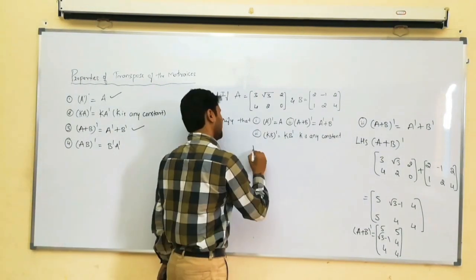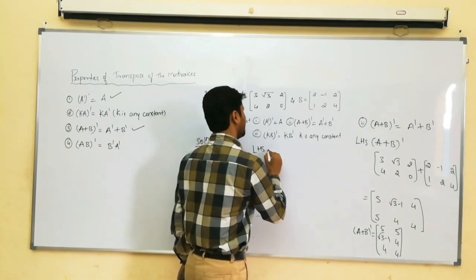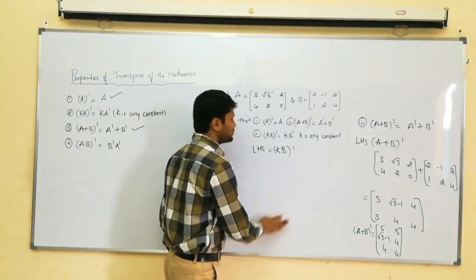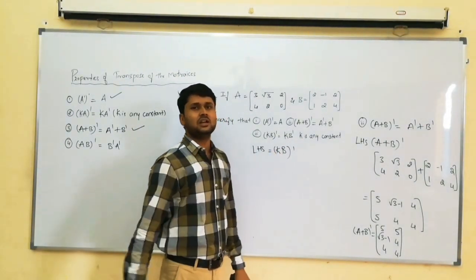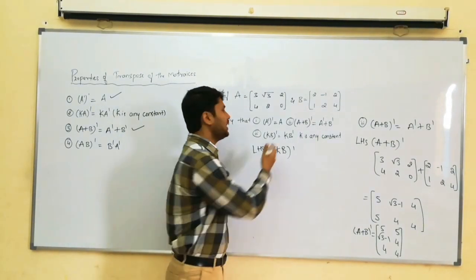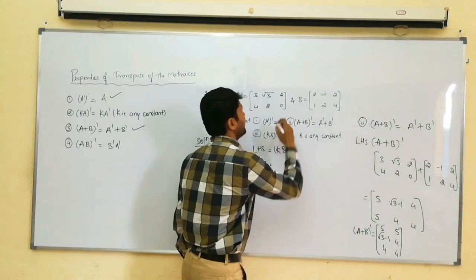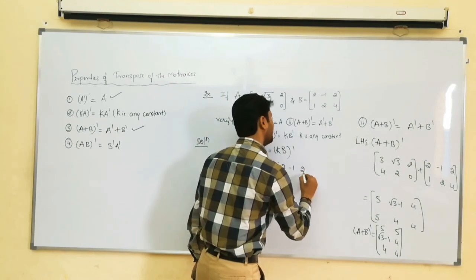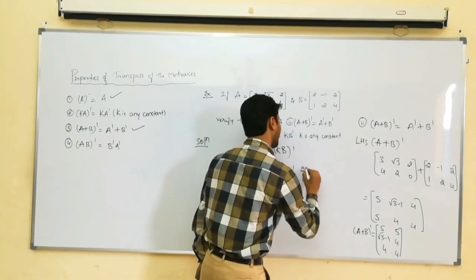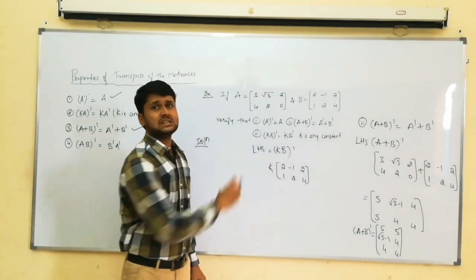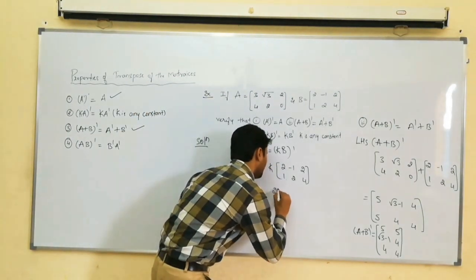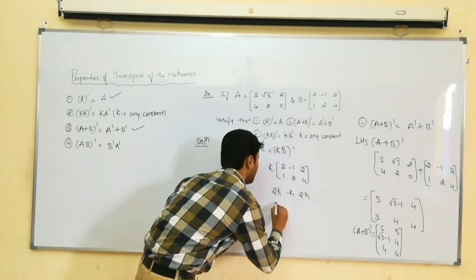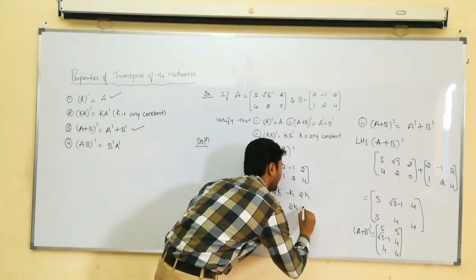Go to the third verification: K into B whole dash is equal to K into B dash. Consider LHS: K into B whole dash. Here K is any constant; they have not mentioned a specific value so I am keeping K as it is. K into B: matrix B is 2, minus 1, 2 in row one and 1, 2, 4 in row two. Multiplying constant K: we get 2K, minus K, 2K in row one and K, 2K, 4K in row two.